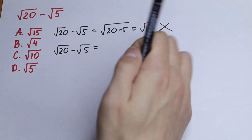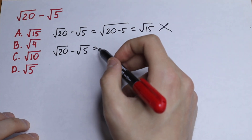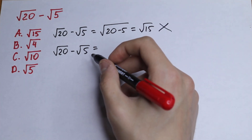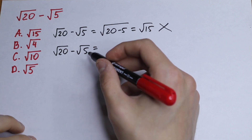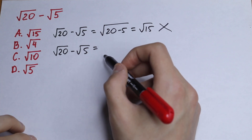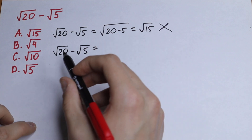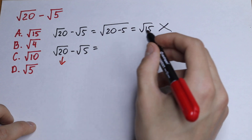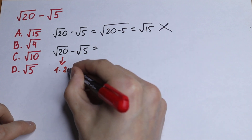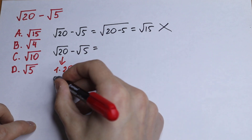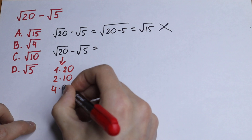Let's simplify this a little bit. Take a look at square root of 5 — the number 5 is not easy to work with, because we cannot express it as a useful product of two numbers. But how can we express 20? We can write 20 as 1 times 20, as 2 times 10, or as 4 times 5.